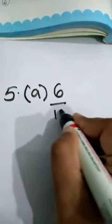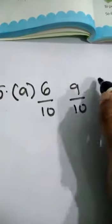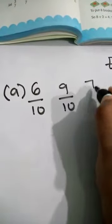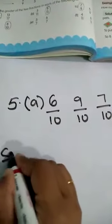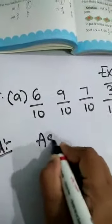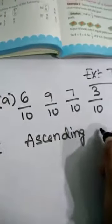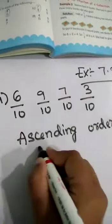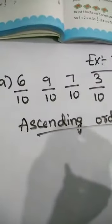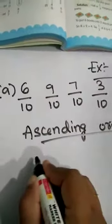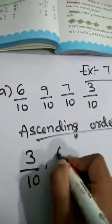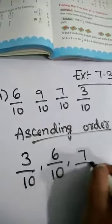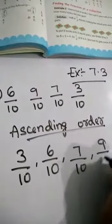5th bit, 1st question: 6 by 10, 9 by 10, 7 by 10, 3 by 10. We have to write these in ascending order. Ascending order means small to big. So: 3 by 10, 6 by 10, 7 by 10, 9 by 10. I have arranged these in ascending order.